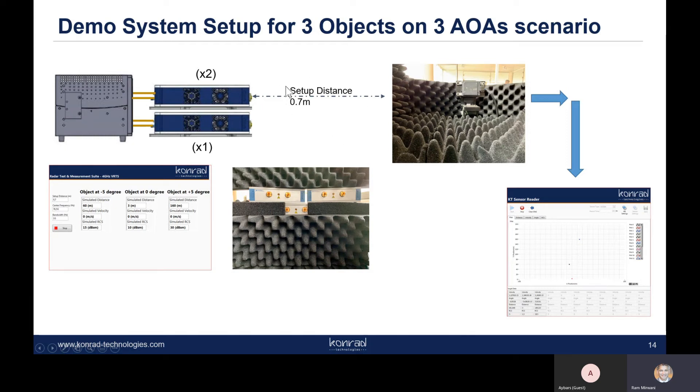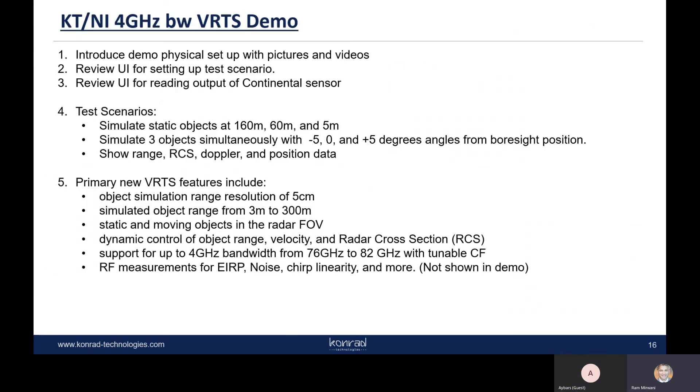We have a setup distance of 0.7 meters and to configure the overall scenario we have software that has been created by Conrad Technologies. Once we set up the scenario using our Continental sensor that we have, the output of the sensor is then also tracked and monitored on another piece of software that we have created so we can do a stimulus response test capability. This is the demo we are going to be showing you today and during the course of the demo we are going to demonstrate how you can set up this scenario, how you could change different object simulation parameters dynamically after you implement it and then how you can also monitor the sensor behavior. That's what we're going to be showing you today in this demonstration. So at this point I'm going to transition over to Aybars.